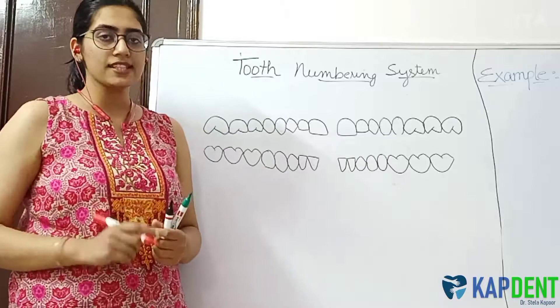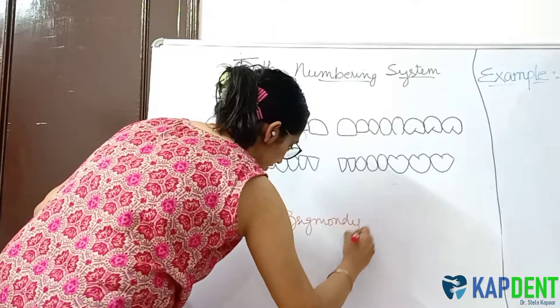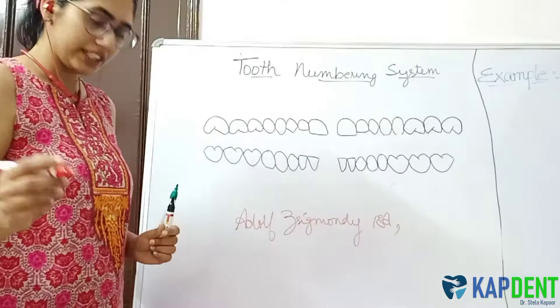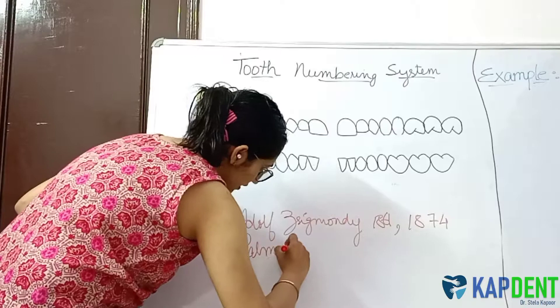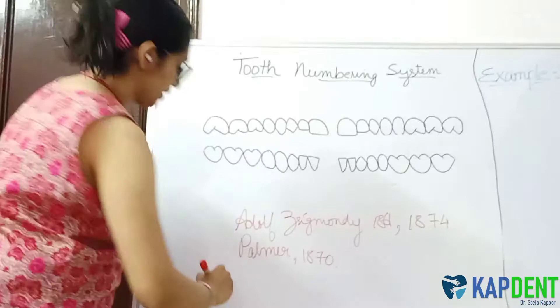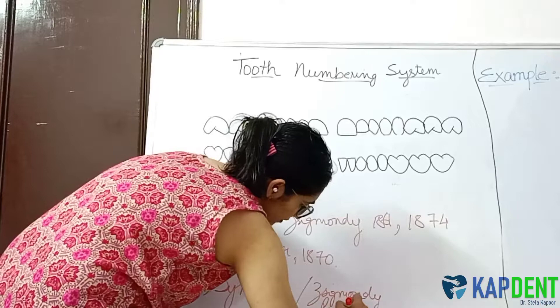The first nomenclature I am going to discuss is the symbolic system, which was given by Adolf Zsigmondy in 1861 and was modified from family dentition in 1874. Independently, Palmer in 1870 also gave this symbolic system. Therefore, this system is also known as the Zsigmondy-Palmer system, or simply the Palmer system.